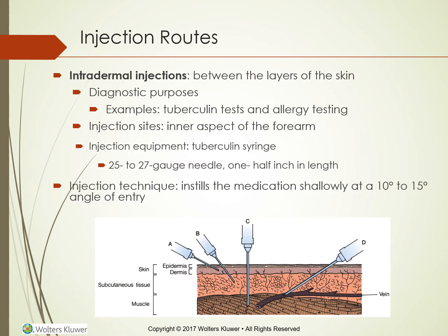Injection routes — intradermal injections go between the layers of the skin. Purposes include a tuberculin test or allergy test. Injection sites are the inner aspect of the forearm. Equipment is a tuberculin syringe, 25 to 27 gauge needle, one-half inch in length. Technique: instill the medication shallowly at a 10 to 15 degree angle.